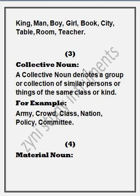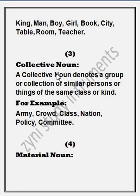The third is collective noun. A collective noun denotes a group or collection of similar persons or things of the same class or kind. Collective noun جو ہے وہ کسی چیز کے مجمعے کو یا گروپ کو denote کرتا ہے — یعنی کہ شخص ہو یا چیزیں ہوں، کسی بھی قسم کی ہوں، لیکن مجمعہ ہو یا group-wise ہو، تو وہ collective noun کہلاتے ہیں.